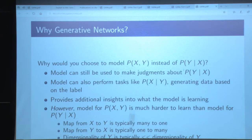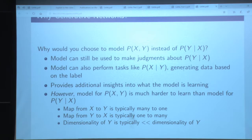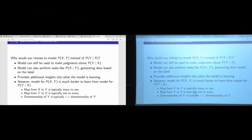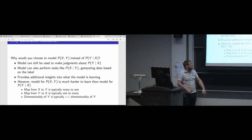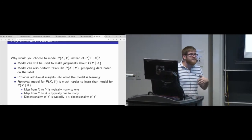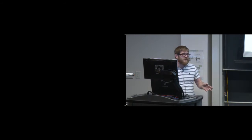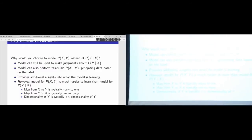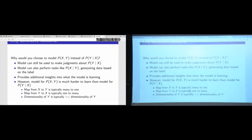It's a related problem, and the question is why would you do that? You can still make judgments about the probability of Y given X if you model the joint distribution correctly. The joint distribution gives you all the information you need — the probability of X and Y combined — from which you can figure out the marginals and all combinations. But it's more complicated: modeling P of X and Y is much harder than just P of Y given X. Your Y's are typically something like a multinomial over 0 through 9, whereas modeling a distribution of X — which is images — is very large and complicated.